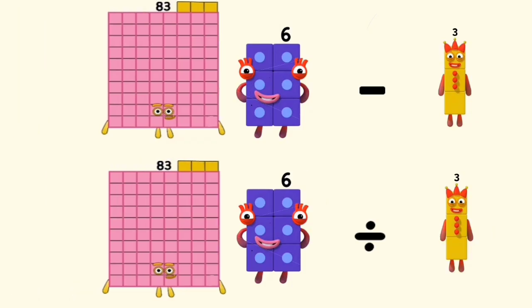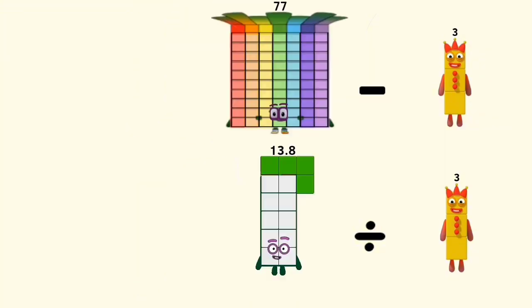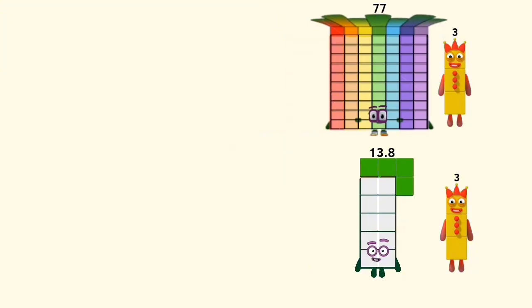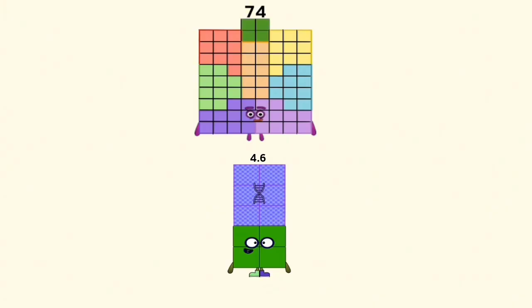83 minus and divided by 3 equals 77 and 13.8. 77 minus 3 and 13.8 divided by 3 equals 74 and 4.6.